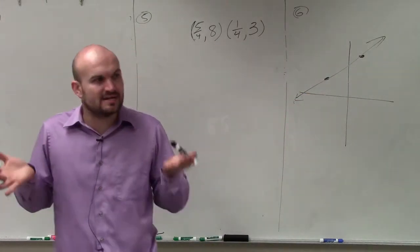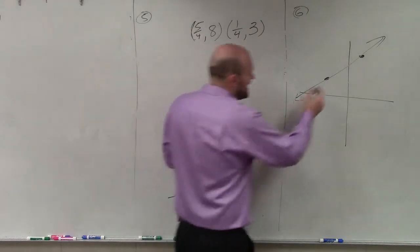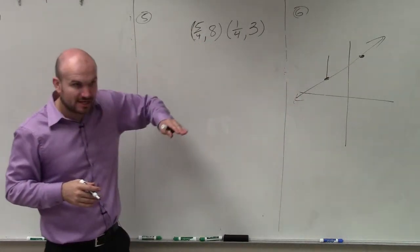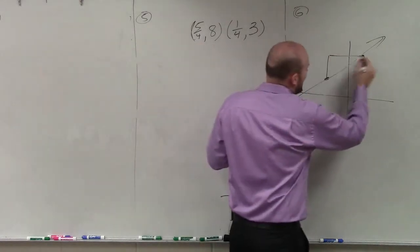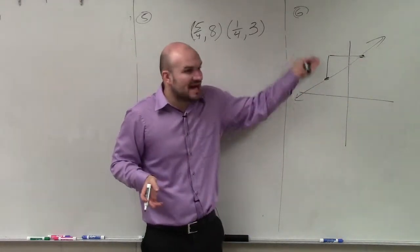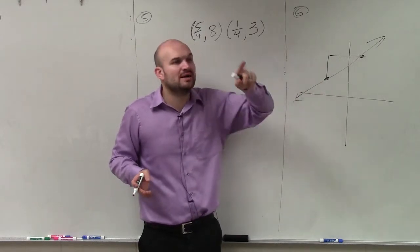But what the slope represents for a line is it represents the change between the two points as the vertical change and the horizontal change. So how far is it horizontally and vertically between any two points?